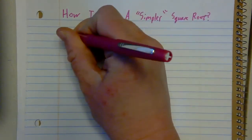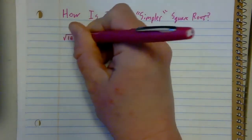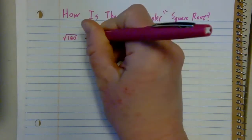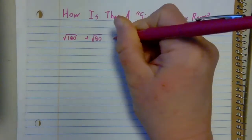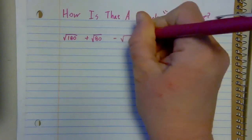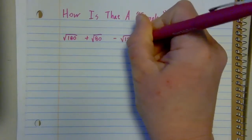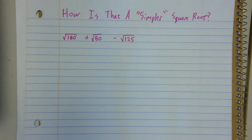So let's say I have the square root of 180 plus the square root of 80 minus the square root of 125. Well, I don't, just looking at these, see anything I can immediately do. But I'll try factoring each of them and see if I get anywhere useful.